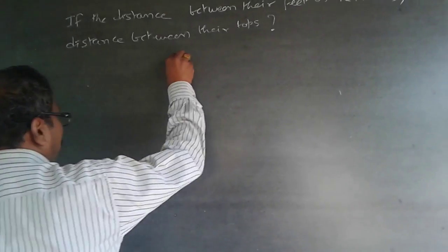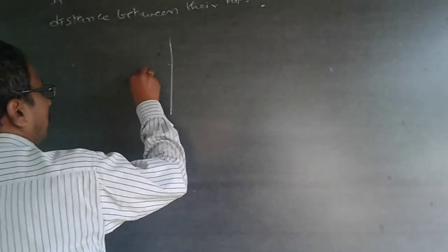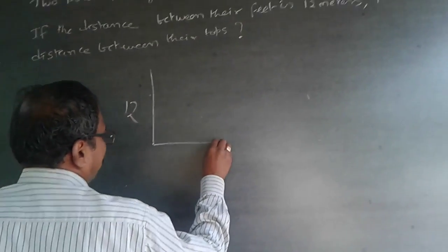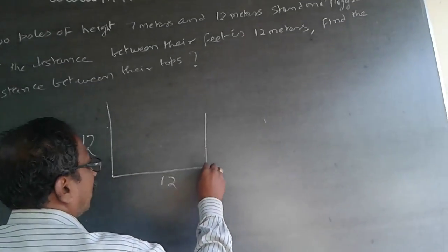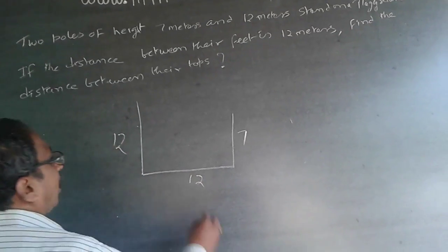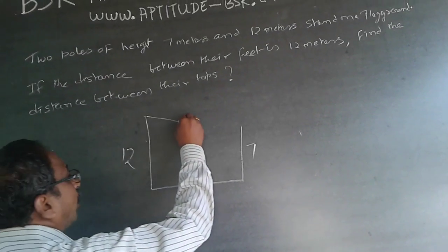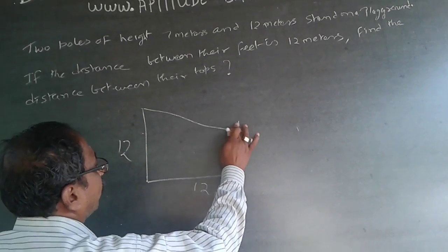So this is 12 meters, the distance between the feet, and this pole is 7 meters. Now what I want is the distance between the two tops.